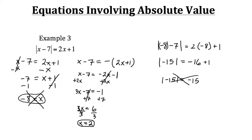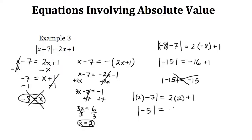Let's double check the other solution, x equals 2. We plug in 2 for x and get the absolute value of 2 minus 7 equals 2 times 2 plus 1. Inside the absolute value we have 2 minus 7 which gives negative 5, and on the right side 2 times 2 is 4 plus 1 equals positive 5. The absolute value of negative 5 is positive 5 — so that checks out. x equals 2 is our valid solution.